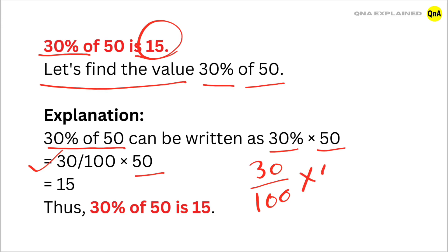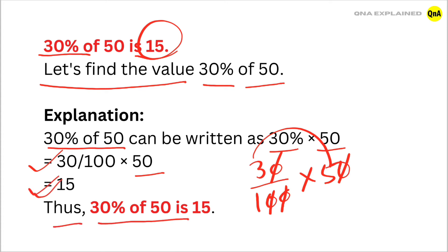Let's solve it. First, cancel out the zeros. We have 3 multiplied by 5, which is equal to 15. Thus, 30% of 50 is equal to 15, so the answer is 15.